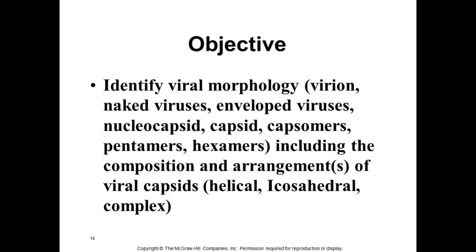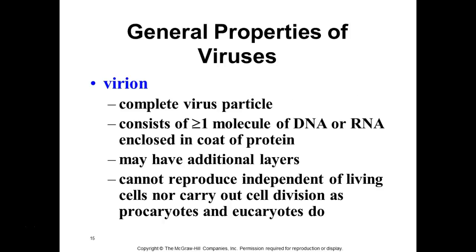My favorite is the bacterial phage that kind of looks like a spaceship — it's one of my favorite-looking viruses. Others have a helical protein coat — spiral-shaped, like DNA forms a helix. And then there's the icosahedral. A viron refers to just a single virus particle, and it consists of one or more molecules of DNA or RNA — one or the other, not both.